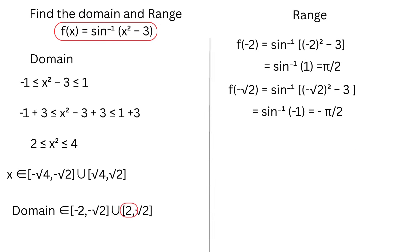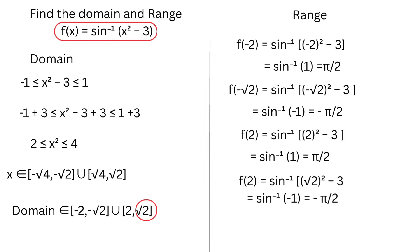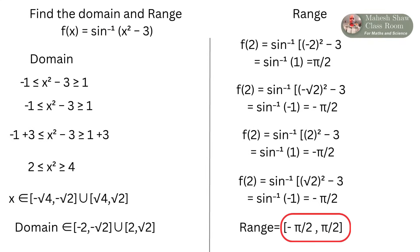Similarly, replacing x with 2 in the function, we get 2² - 3, which is 4 - 3, that is sin⁻¹(1), which is equal to π/2. Lastly, replacing x with √2, we get sin⁻¹(-1), which is equal to -π/2. Therefore, the range of the function is [-π/2, π/2], both inclusive.